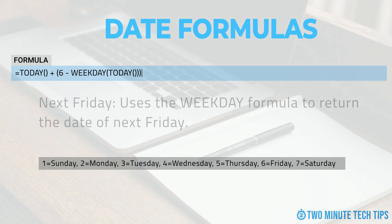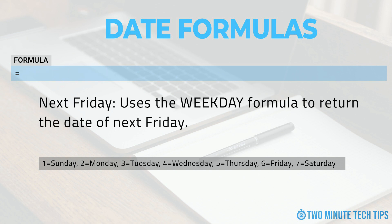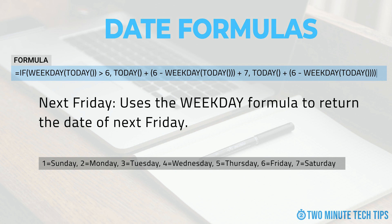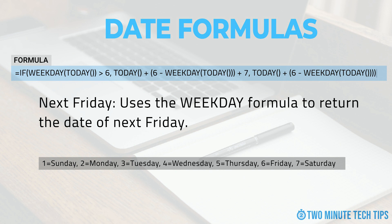To return the date for the next Friday on the calendar, we will add an IF formula in combination with a WEEKDAY formula. This formula says if the current weekday is greater than the value we wish to return — in this case 6 or Friday — return Friday of the current week plus 7 days; otherwise, return the Friday of the current week. We can change these 6s to a different value if we want to return a different day of the week.